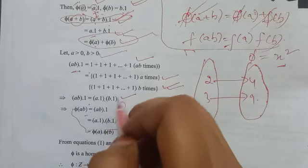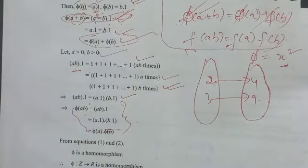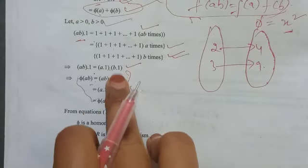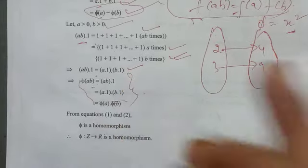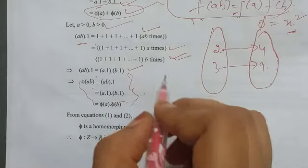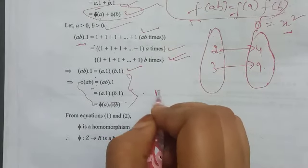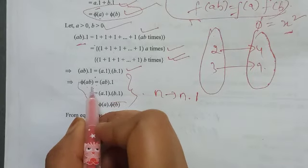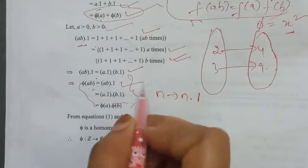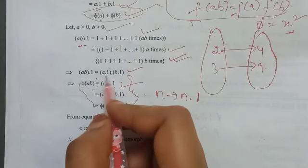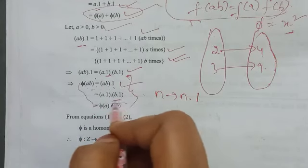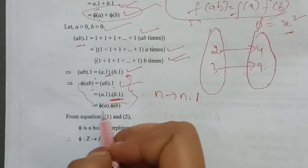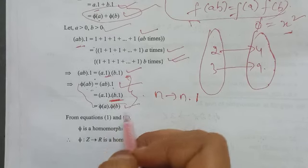Now we will get the next step. Phi of ab is equal to ab.1. Now, ab.1 means a.1 into b.1. This step shows that a.1 and b.1 can be rewritten: a.1 value is phi of a, and b.1 value is phi of b. So phi of ab equals phi of a times phi of b.